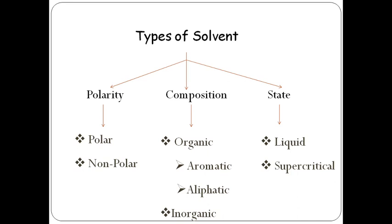The next classification depends upon state. A solvent can be liquid — as usual, like water, which is a universal solvent. Next is the supercritical state, which is recently used, where gases like carbon dioxide are compressed under high pressure and converted into a liquid state, ultimately acting as a solvent — these are called supercritical solvents. Another category is ionic liquids, which are solid at room temperature but once heated convert to liquid state, and can be used as solvents at higher temperature.